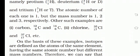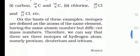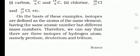He kuch examples hain isotopes ke. Isotopes yaani jinka atomic number same but mass number different. On the basis of these examples, isotopes are defined as atoms of the same element having the same atomic number but different mass number.